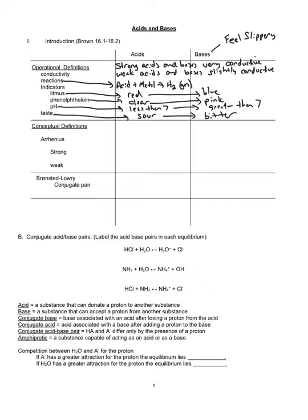Our next concept in the unit of equilibrium is to understand acids and bases. Equilibrium primarily deals with weak acids and bases, which we'll talk about mainly next week. This week we're just going to get accustomed to properties of acids and bases, how to calculate pH and all that stuff. Then next week we'll talk about weak acids and weak bases, and finally we'll finish off this unit talking about titrations.